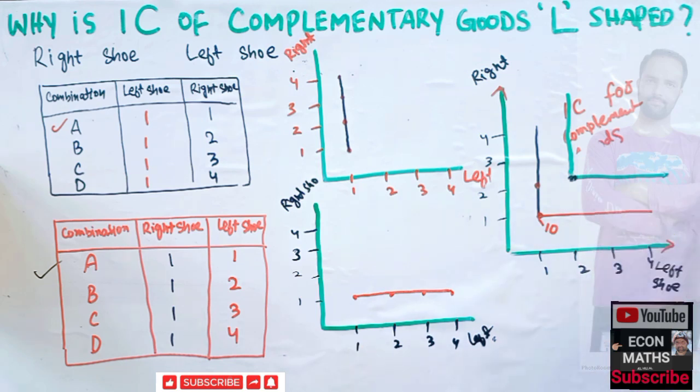I hope I made myself clear in this video about why the indifference curve of perfectly complementary goods is L-shaped. Thank you.